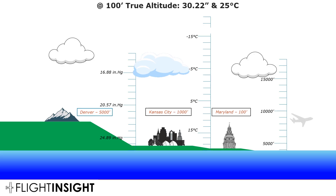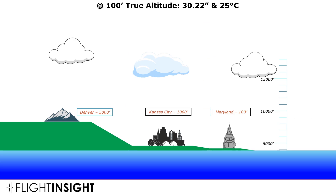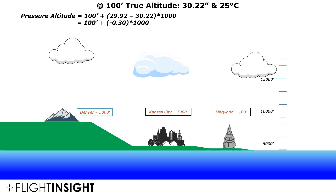Let's look at an example. If we're at an airport in Maryland with a true altitude of 100 feet, sea level pressure of 30.22, and a temperature of 25 degrees Celsius, what's our pressure and density altitude? For pressure altitude, we take our true altitude of 100, then take the difference of the standard 29.92 and the reported pressure of 30.25, and multiply by 1,000. The difference between those two pressures is negative 0.3. Multiply that by 1,000 to get negative 300, which gets subtracted from the true altitude of 100 to give us a pressure altitude of negative 200.